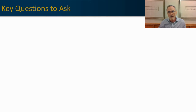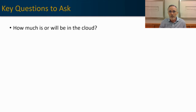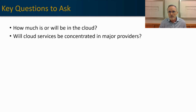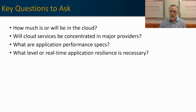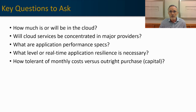Before we evaluate different SD-WAN architectures, we're going to want to answer a couple of key questions. The first question is: how much are you going to be in the cloud? Are you adopting a cloud-first philosophy, or are you moving select applications only out to the cloud? If you are moving to the cloud, will those services be concentrated in the major cloud providers like Azure and AWS, or distributed through a variety of cloud service and SaaS providers? What application performance specs will you have to comply with? What level of real-time application resiliency is necessary — for example, are you going to UCaaS, Unified Communications as a Service, where resiliency may have a high requirement? How tolerant are you of monthly costs versus capital expenses, because there are different acquisition models between these various architectures?